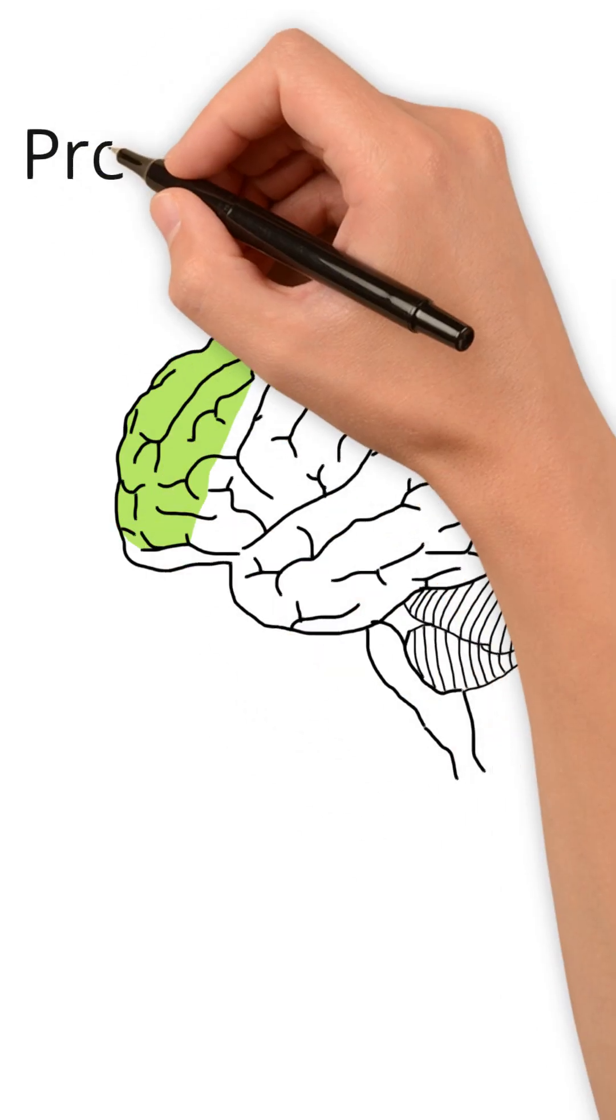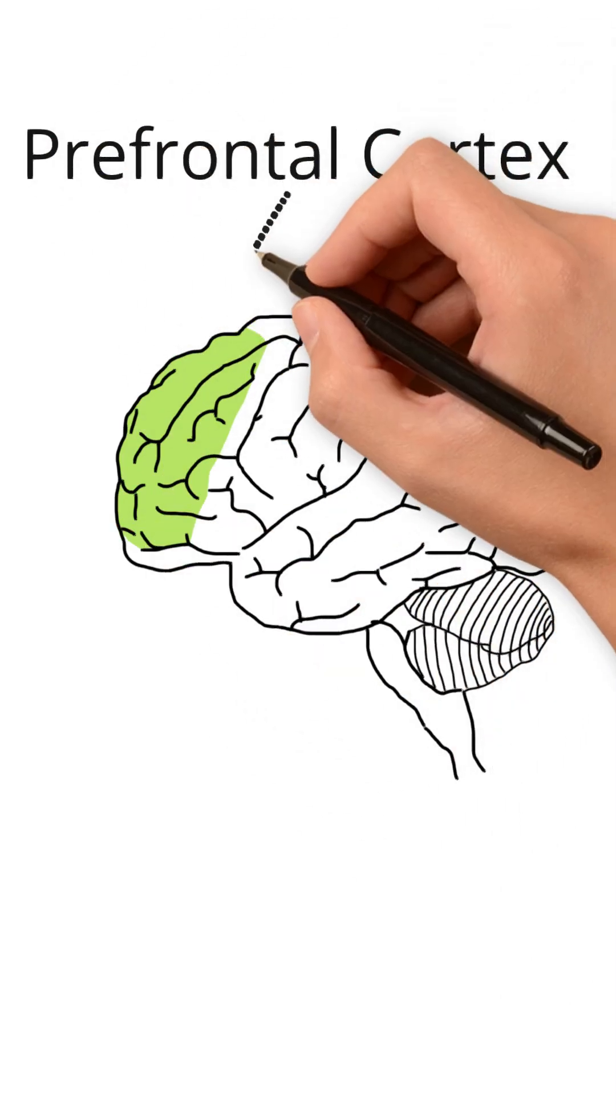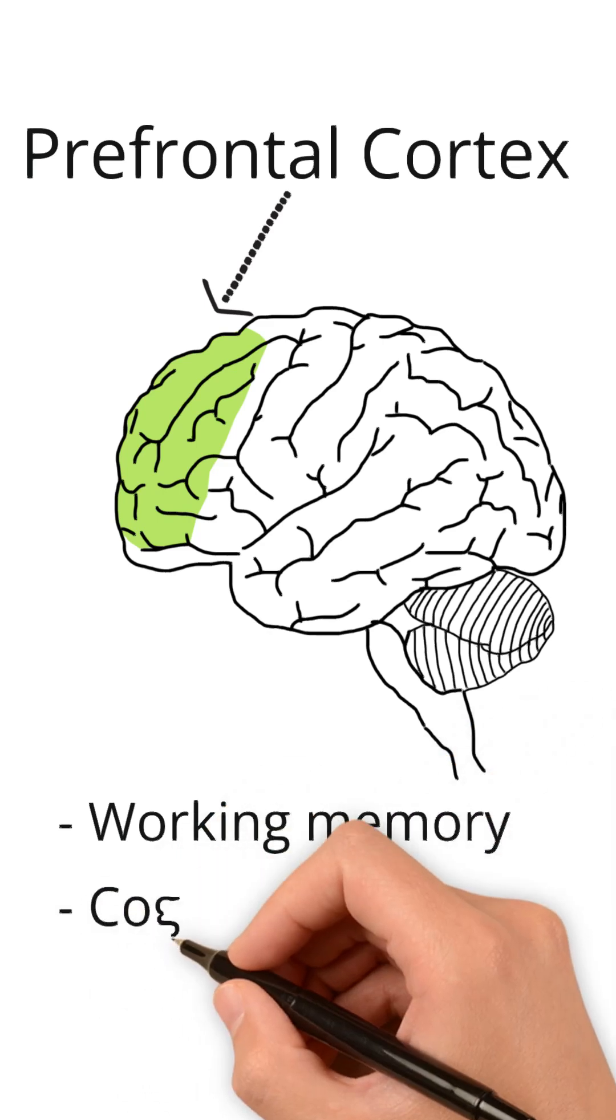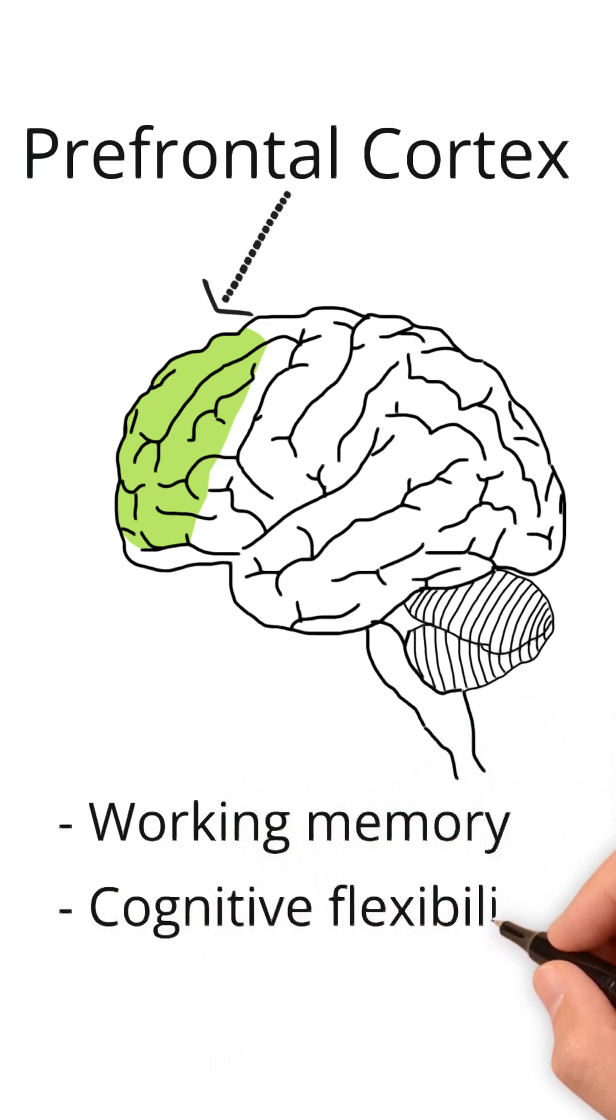One of the most prominent regions is called the prefrontal cortex, which is most well known for its role in executive functions, which includes things such as working memory and cognitive flexibility.